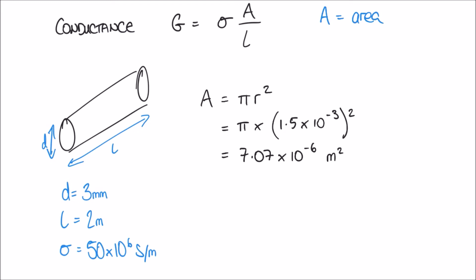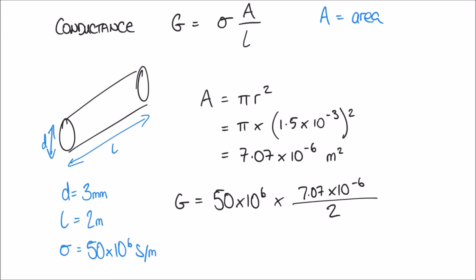Now we can work out the conductance G, which equals sigma times area over length. Sigma is 50 times 10 to the 6, multiplied by the fraction: area 7.07 times 10 to the minus 6 on top, divided by the length of 2. Calculating that gives an answer of 176.75 Siemens — that is the conductance.